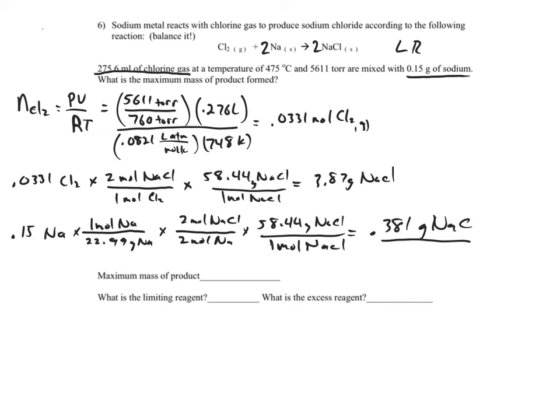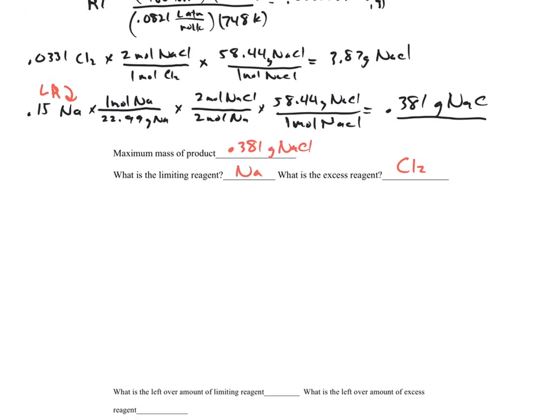Our limiting reagent is sodium. The maximum mass of the product that could be formed comes from the limiting reagent, and the excess reagent is chlorine. The next thing we want to do is figure out, using our limiting reagent, how many grams of chlorine, or I should say moles of chlorine, reacted at the same time.